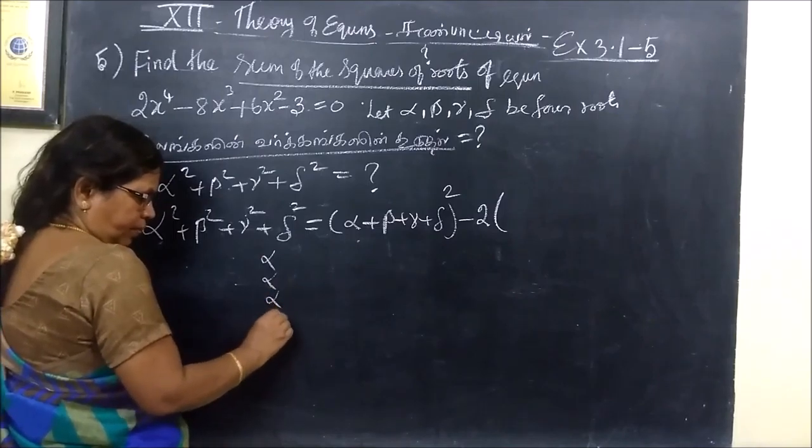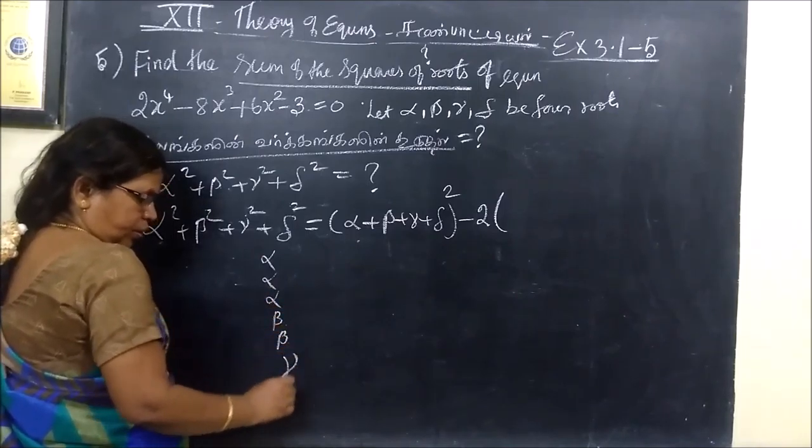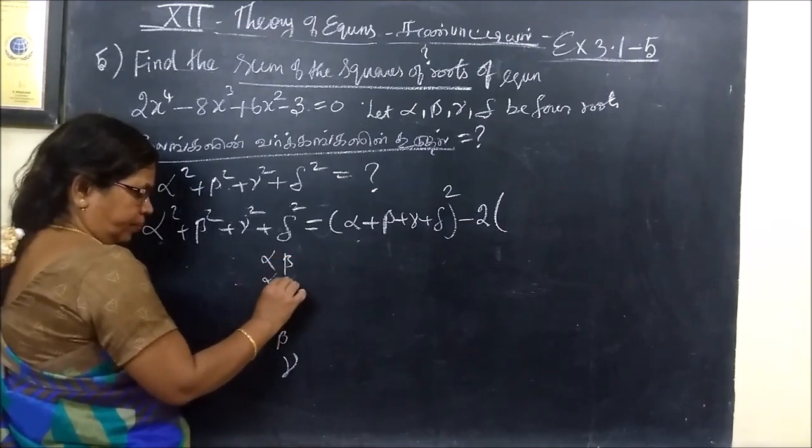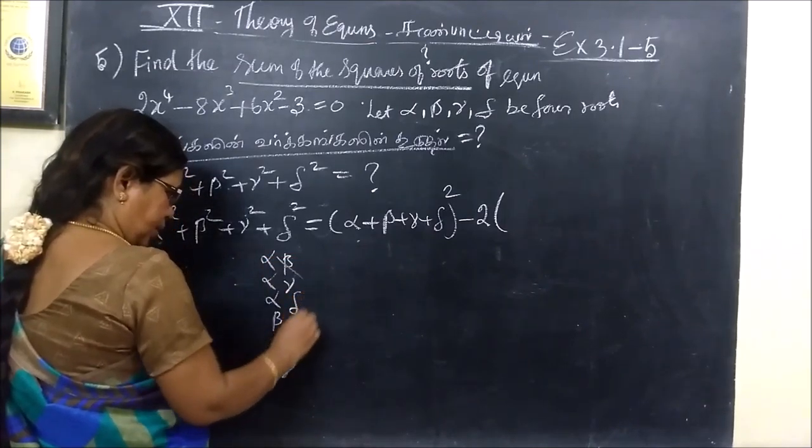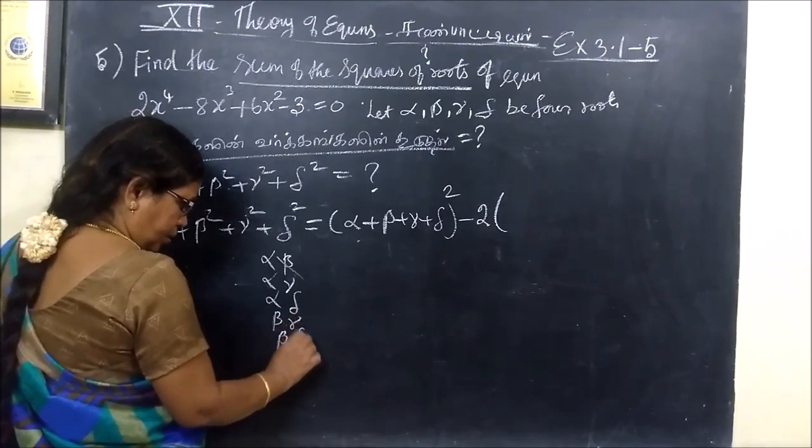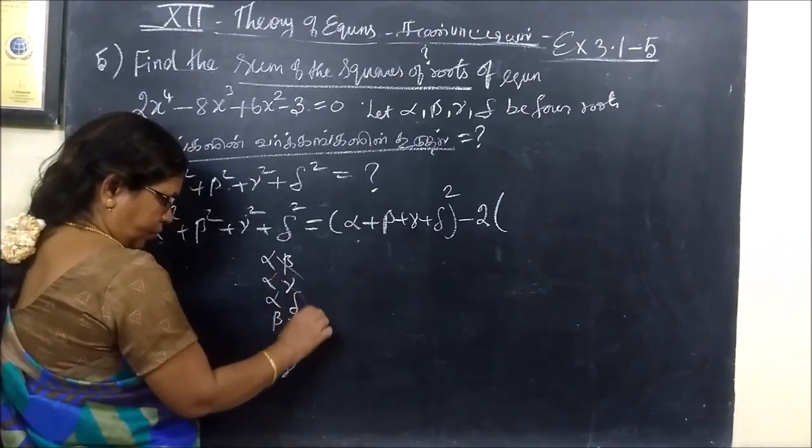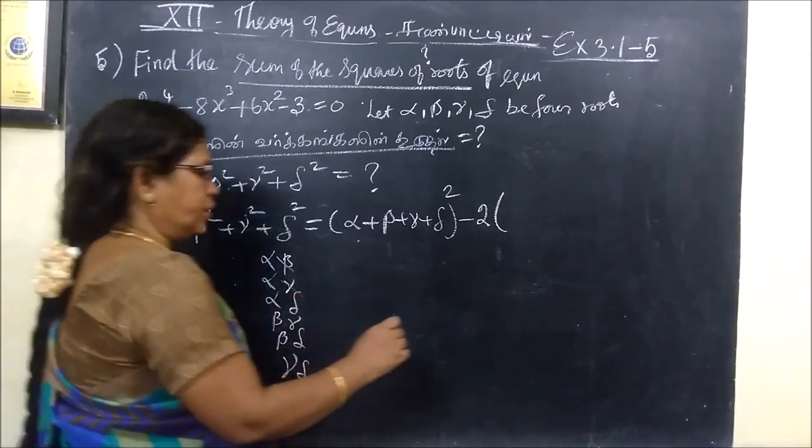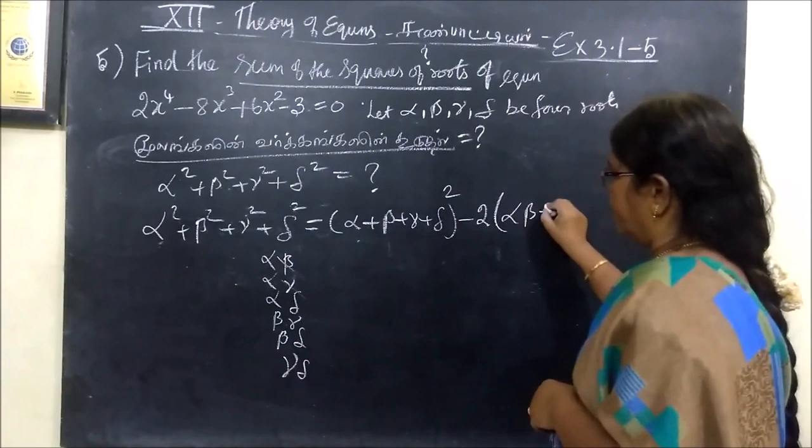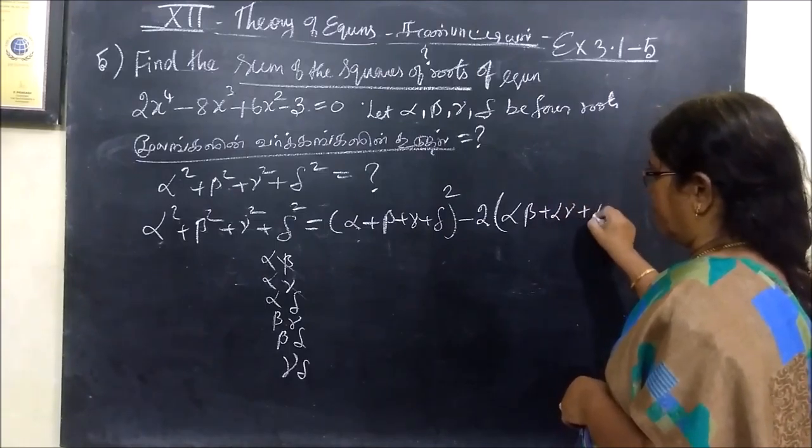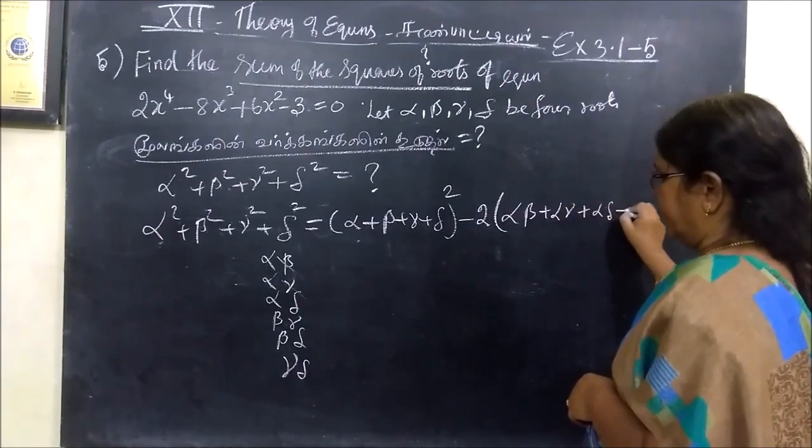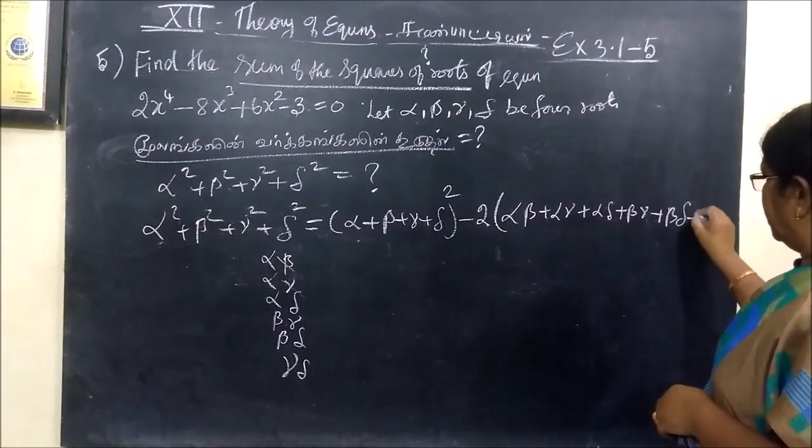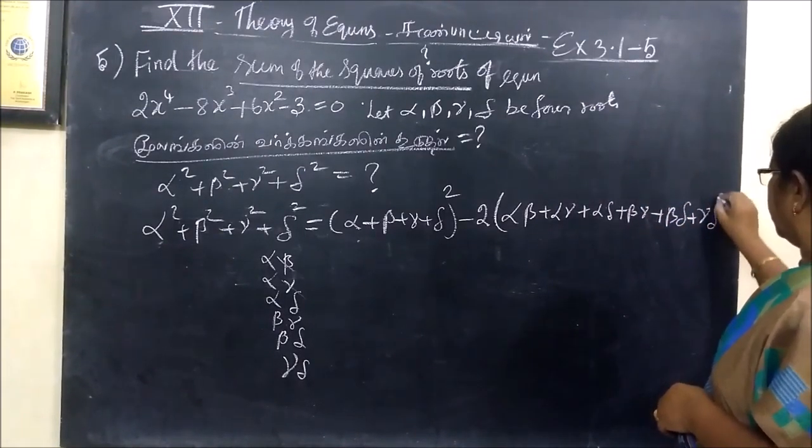Alpha, beta, gamma combinations. Alpha beta, alpha gamma, alpha delta, plus beta gamma, beta delta, gamma delta.